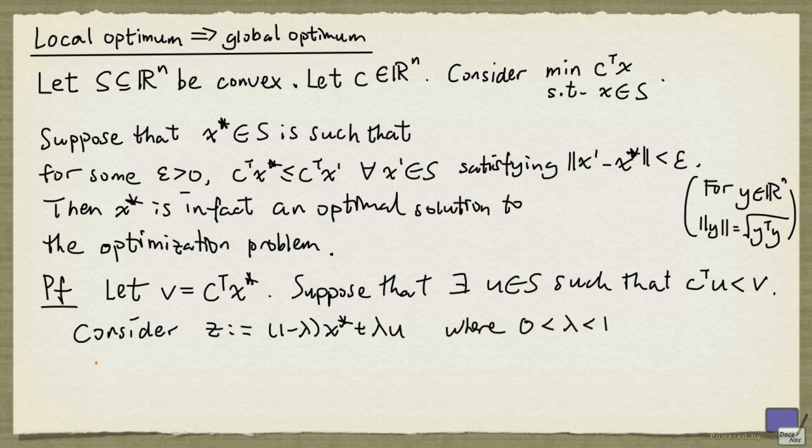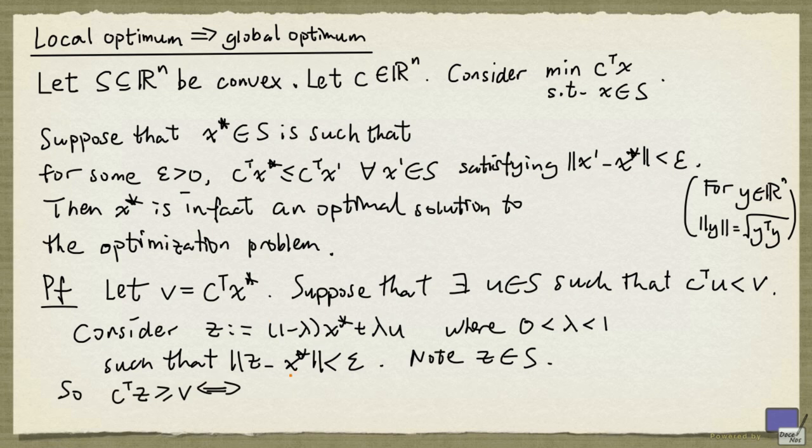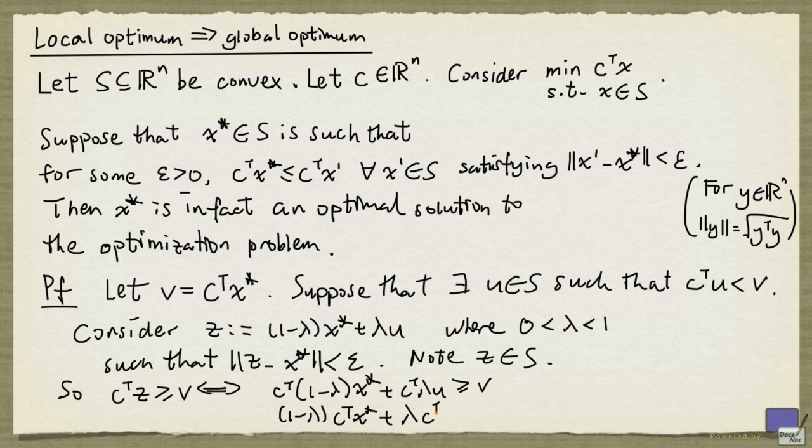We are going to choose lambda so small that z minus x star has norm less than epsilon. Clearly this is possible because as lambda approaches 0, z approaches x star. Because S is convex, z must also be in S. And what this means is that z satisfies this condition and so z must have objective function value at least v, or equivalently c transpose 1 minus lambda x star plus c transpose lambda u is at least v. But the left hand side can be rewritten as 1 minus lambda times c transpose x star plus lambda c transpose u.